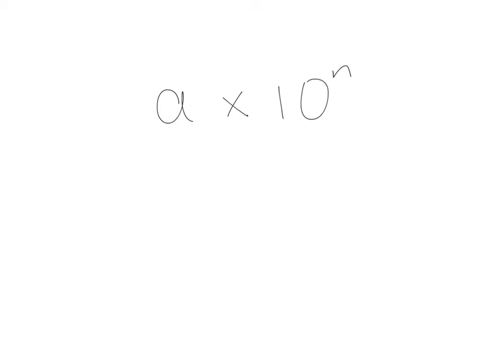Generally we will write numbers that are in scientific or standard form as a number times 10 to the power of something. One thing to say about this number: it needs to be in between 1 and 10. It cannot be bigger than those values.